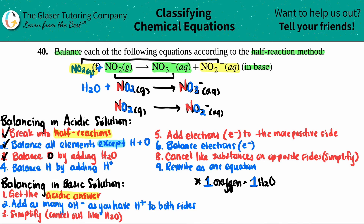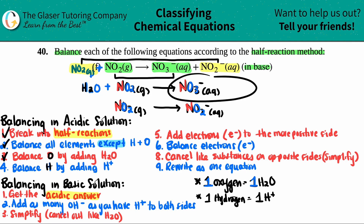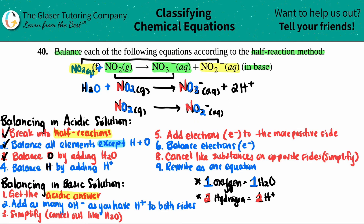Now I balance the hydrogen by adding H⁺. If you need to add one hydrogen, add it as one H⁺. In the top half-reaction, I added H₂O which gives me two hydrogens on the left, but on my product side I have no hydrogen. So I have to add two H⁺ to the right side. The bottom half-reaction doesn't have any hydrogen, so there's nothing to balance. Step four is done.